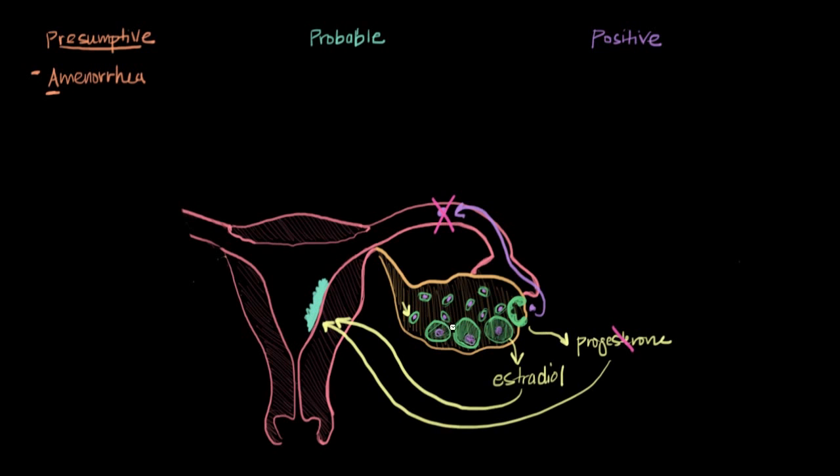But if instead the egg does become fertilized, it will implant into the uterus. And when it implants into the uterus, it makes this hormone called human chorionic gonadotropin, usually just referred to as HCG. And human chorionic gonadotropin tells the corpus luteum to stay alive and to keep making progesterone. And that progesterone, in turn, keeps the endometrium alive and healthy so that it doesn't slough off and you don't end up with a period. So that is why when an egg becomes fertilized, when you become pregnant, you miss a period.